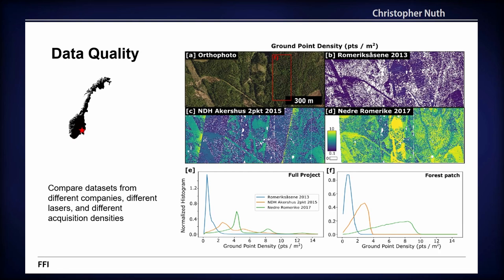Here are some comparisons. I grabbed a region not far from my house showing one area with three acquisitions: 2013, 2015, and 2017. The ground point coverage is visible in the histogram. The 2013 data is less than two points per square meter. By 2015, with different lasers, you're getting above two. By 2017, you have really great coverage with up to almost 10 points per square meter — this is just a forest patch, since I also talk about vegetation.